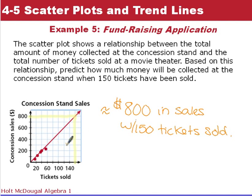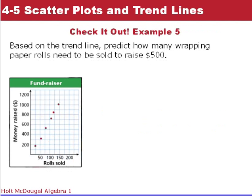Keep in mind you're making a prediction, so you might get something around 775 to 800 — you're looking for the ballpark number. Now it's your turn to do a Check It Out: draw your trend line and use it to find how many rolls you'd need to sell to raise $500.